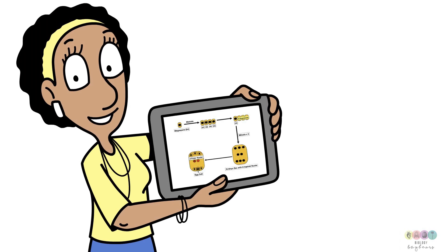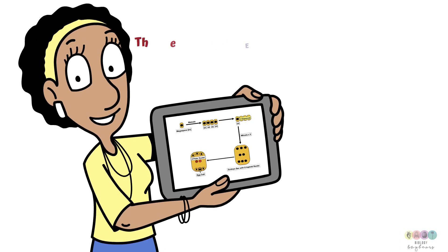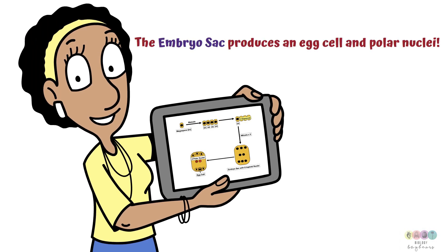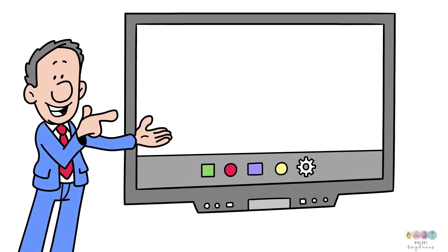The next statement: the embryo sac produces an egg cell and polar nuclei — those two polar nuclei — and you are going to specifically outline each of the steps.